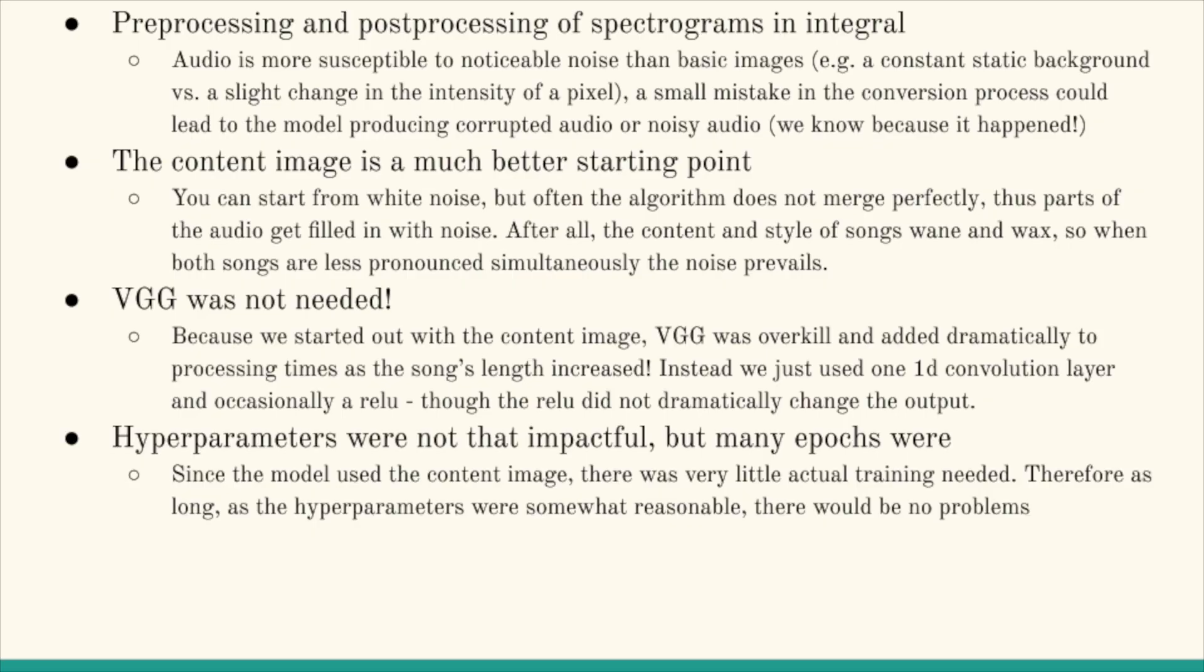That covers all the hyperparameters and now we'll be talking about our results. Content loss is more important than it seems. Pre-processing and post-processing of spectrograms is very important. Content image is a much better starting point than white noise. VGG was not actually necessary. And hyperparameters aren't that impactful, but many epochs are. This is just because we start off with the content image, so we're much closer to the output image space. So tweaking the hyperparameters didn't help much, but using many epochs to really lower that loss and decrease the noise was very helpful.